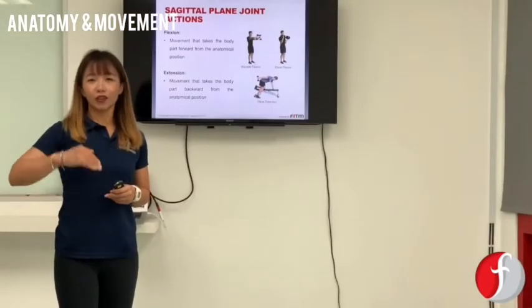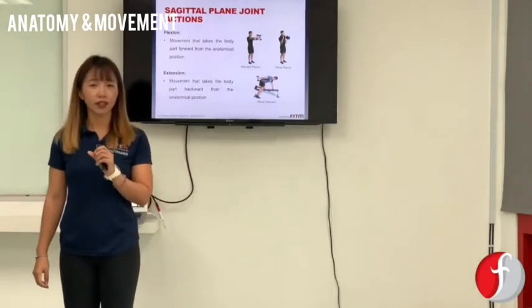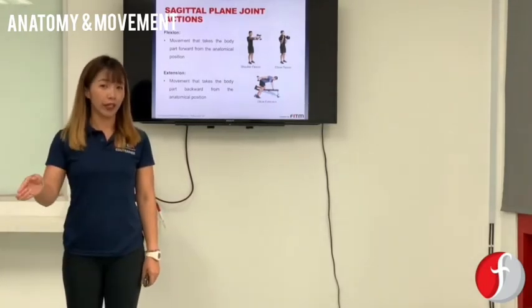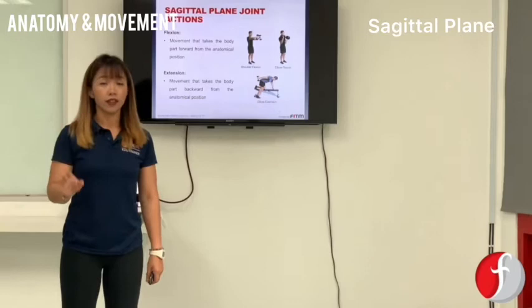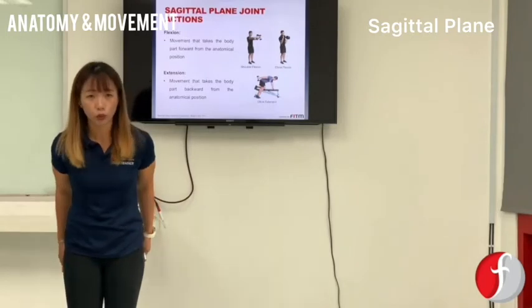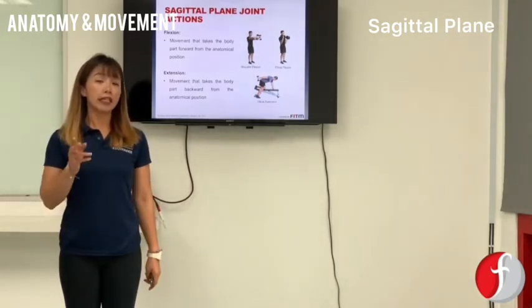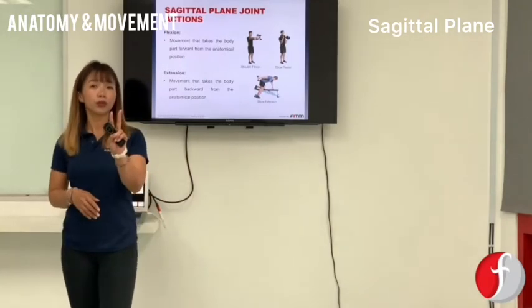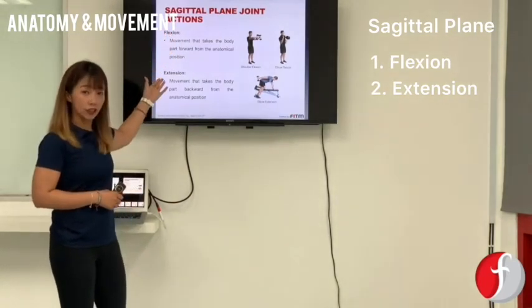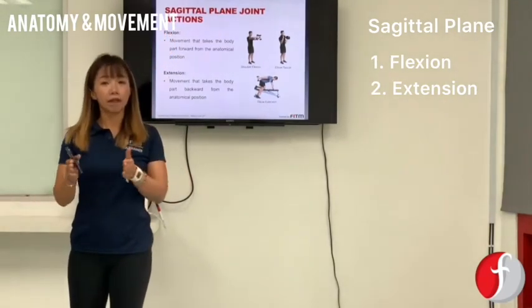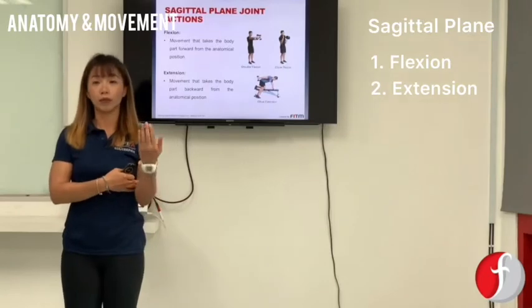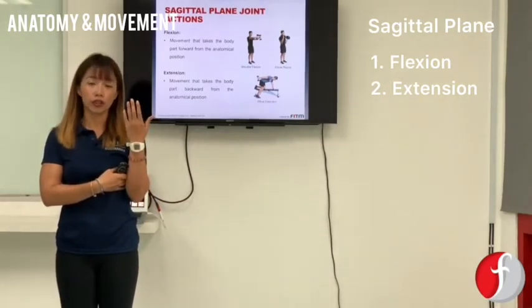Now let's take our learning to the next step. For each plane of motion that you've learned, we will look at what joint actions can happen in each plane. Starting with the sagittal plane — in this plane we can perform two joint actions: it will either be a flexion or an extension. When you have joint flexion, it basically means you're closing up the joint. When you are extending the joint, you are opening up the joint.